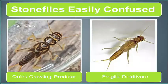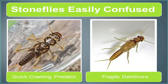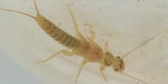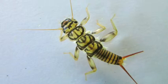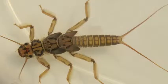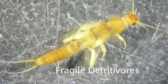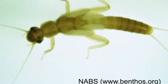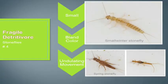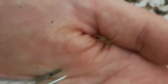Two types of stoneflies that volunteers commonly confuse for one another are quick-crawling predators and fragile detritivores. These pictures show a pretty big difference, but volunteers often confuse small quick-crawling predators and large fragile detritivores. A quick-crawling predator has a very bold pattern to it and they're also very quick — when you open up your net and something goes crawling off, it's almost certainly a quick-crawling predator. Fragile detritivores look much the same, although they're generally smaller and more bland in color. They have much more fragile bodies and move gently back and forth, almost like a snake going through the grass, whereas quick-crawling predators are more robust and crawl quicker.